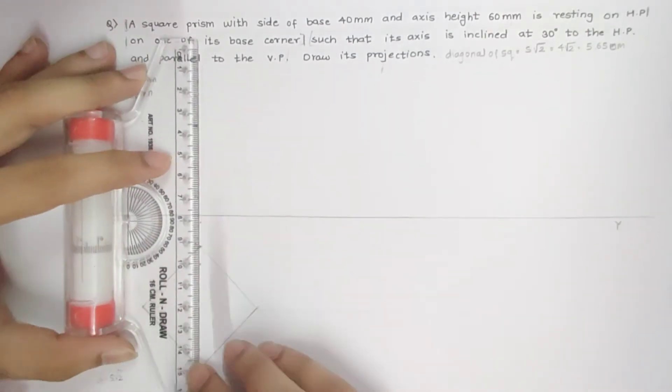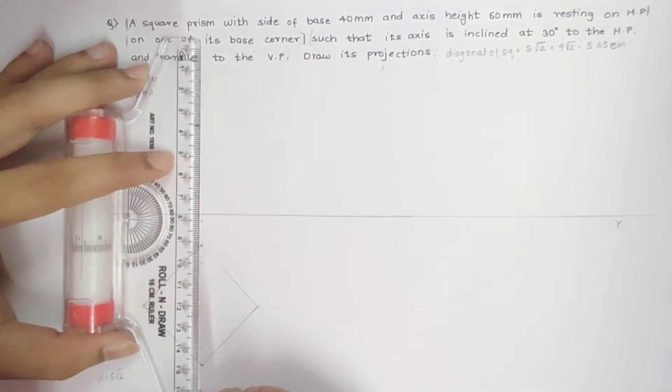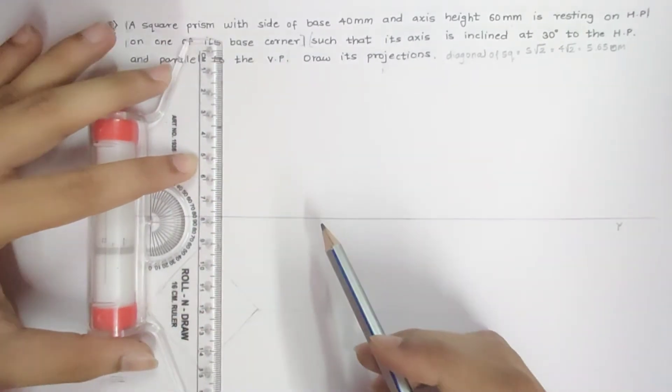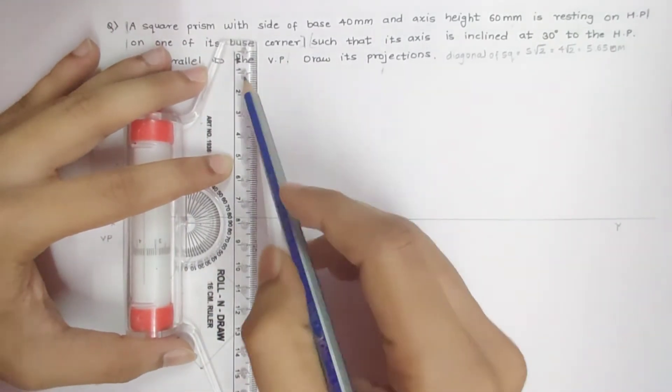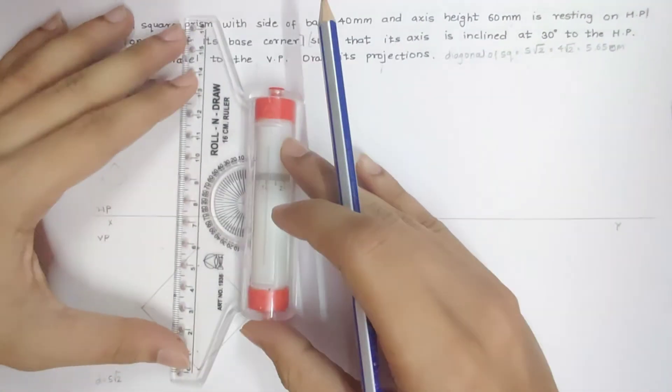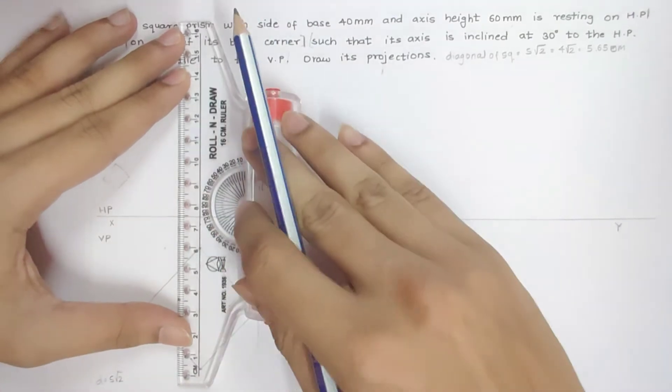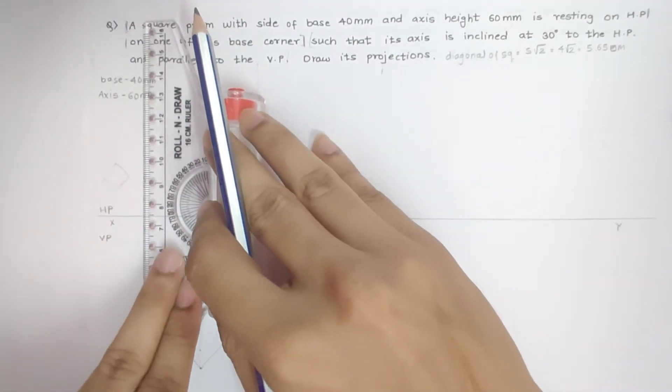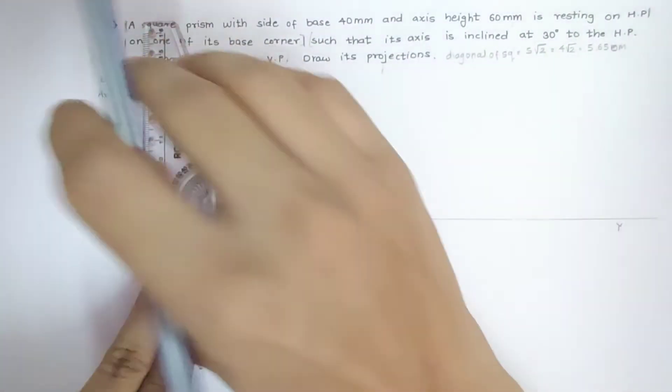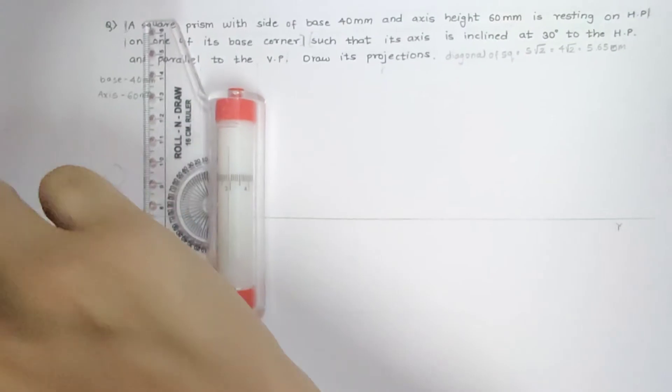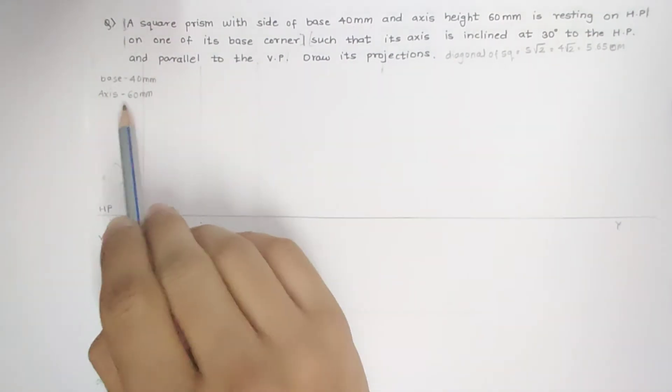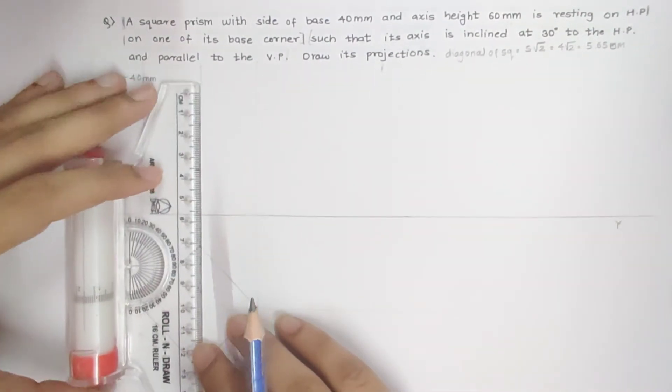I will mark three points. We take operation on the HP for the projection. They have said axis is 60mm, so I will mark it down 60mm.